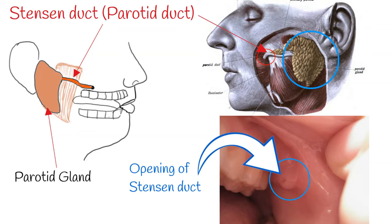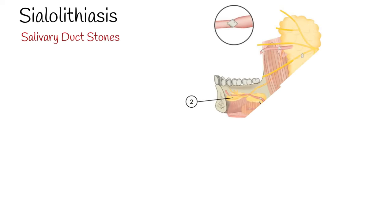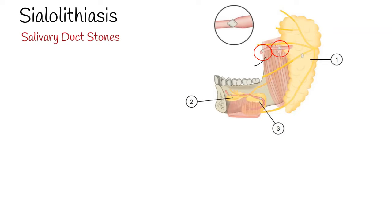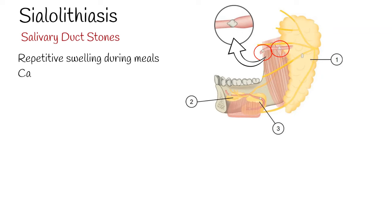Clinically, Stenson duct is important because of diseases which can affect this duct. Sialolithiasis is caused by salivary duct stones or strictures, resulting in a mechanical obstruction of the salivary duct, causing repetitive swelling during meals, which can remain transitory or be complicated by bacterial infections.